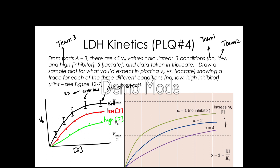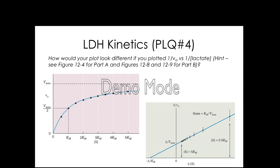The next pre-lab question has us take the same data and plot it a different way. The previous plot showed an increase in reaction velocity as we increase substrate concentration. Vmax represents the fastest the reaction can go. To reach Vmax, we'd have to go out to infinite substrate concentration — we're never really going to be able to get there, so mathematically we'd like to extrapolate to find that maximum velocity.